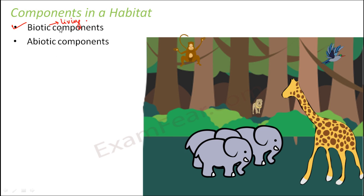Biotic components are the living components — those living organisms are the biotic components. 'Bio' means life. For example, in a forest, the biotic components are the living organisms like the plants, animals, insects, and birds who live in the forest.